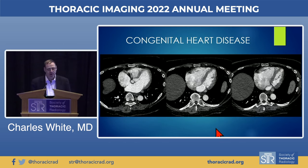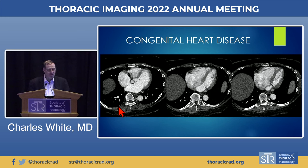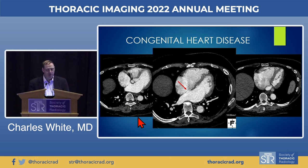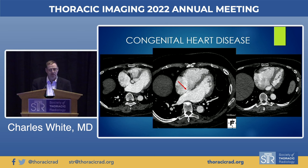Congenital heart disease is another important area, though not all cases are difficult. Shown here is a patient where the finding is better seen on reconstructed four-chamber images: a defect in the atrial septum — a secundum-type atrial septal defect. This is the most common congenital heart disease in adults, whereas VSD would be more common in children.